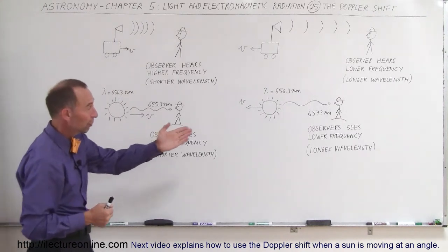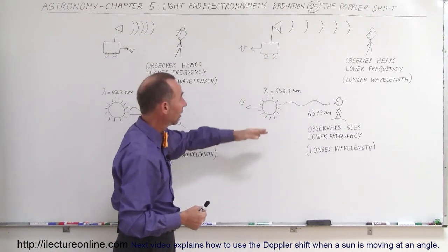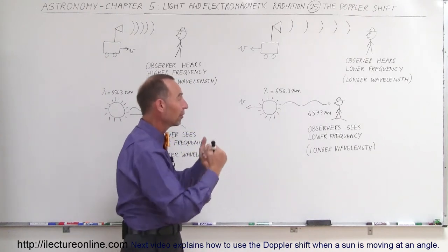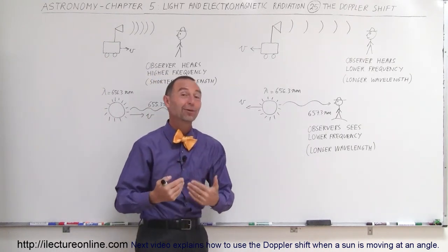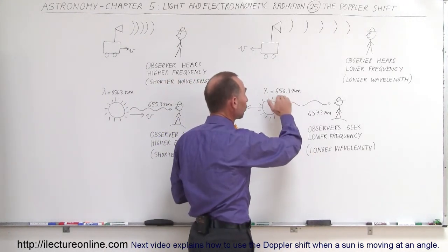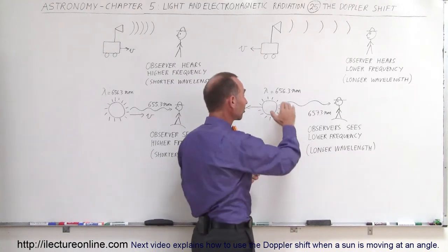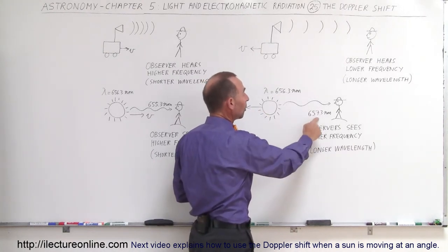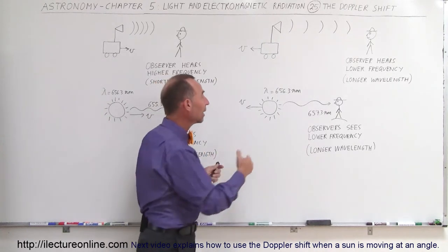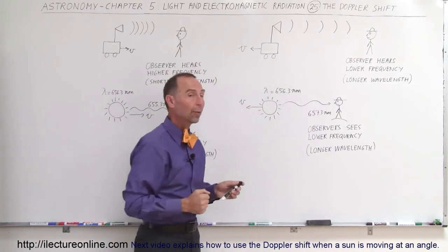Now, if the star is moving away from us, just like with the sound, then the wavelength would be longer. So we wouldn't hear a lower frequency, we would see a lower frequency and because of the long wavelength and let's say that the source was again the H alpha line at 656.3 nanometers, we would observe it at a longer wavelength and so that would then be an indication that the star is moving away.